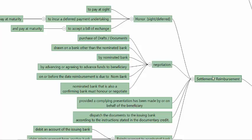Honor means: to pay at sight if the credit is available by sight; to incur a deferred payment undertaking if the credit is not available at sight, and then pay at maturity; or to accept a bill of exchange if the credit is available at a deferred date, and then pay at maturity.